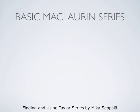Start by recalling certain basic Maclaurin series. The simplest interesting Maclaurin series is the geometric series where the ratio of two subsequent terms is always x — that is the series summation k from 0 to infinity of x to the power k. The sum of this geometric series is the function 1 divided by 1 minus x, and this series converges and represents this function if and only if the absolute value of x is strictly less than 1.